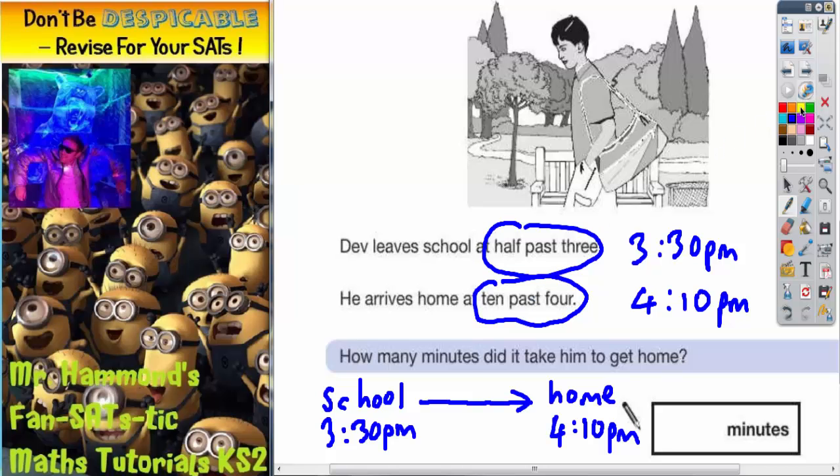So the question is, what is the time gap from 3:30pm to 4 o'clock? Well, if you try and break this down into stages, if we go to 4pm first, then actually the time gap from 3:30pm to 4:00pm is 30 minutes.